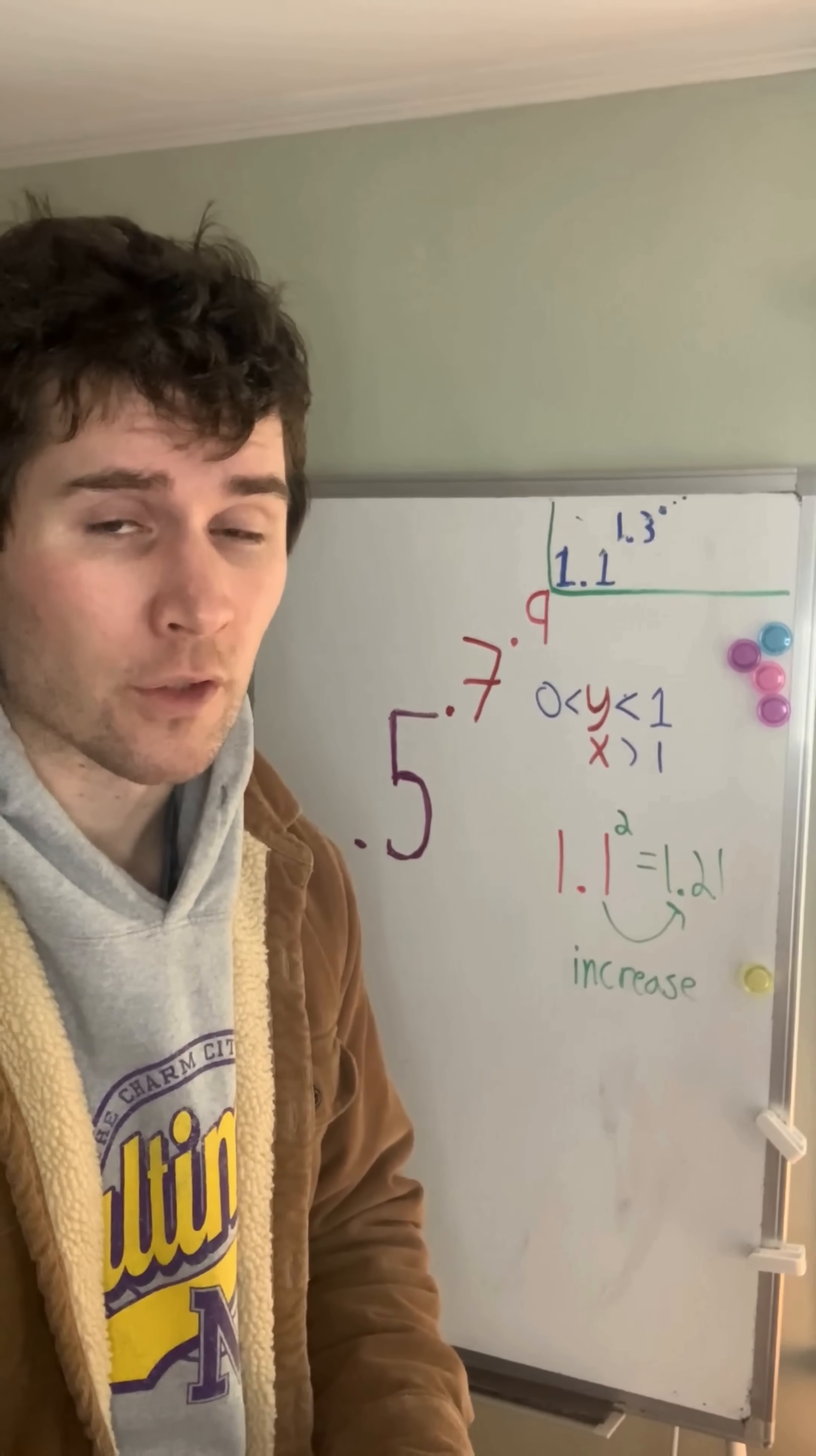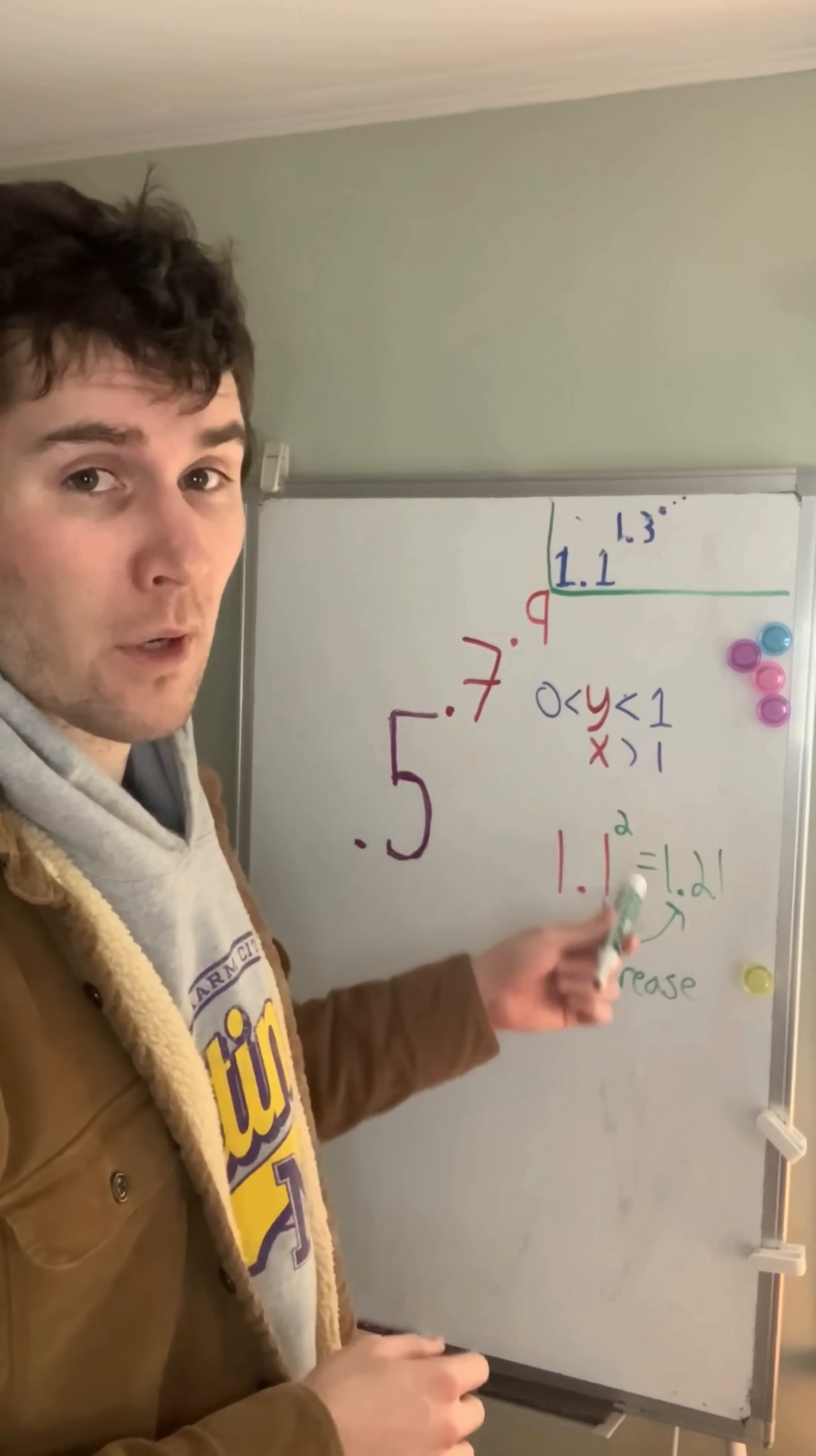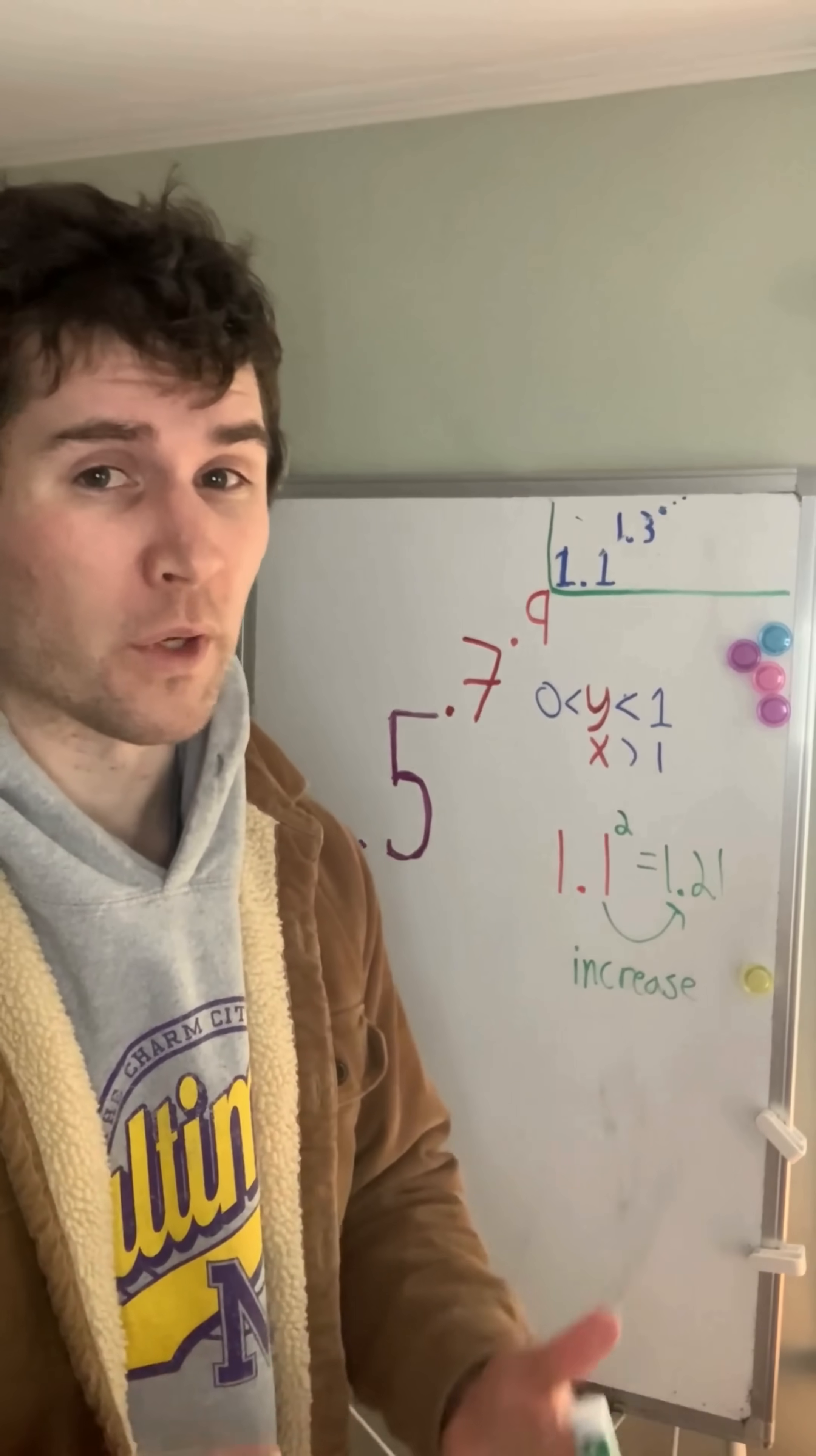Although we can't do all the calculations, we can still see what the trend is. And what we can see is that a number greater than 1 raised to a number that's also greater than 1 will yield a bigger number. 1.1 squared becomes 1.21.